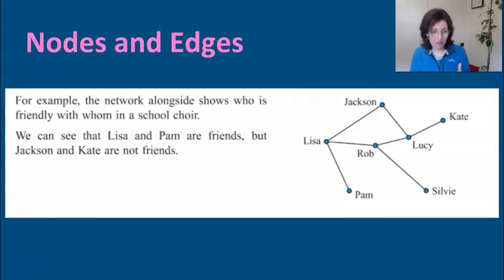Here's an example of a friendship network, and it shows who's friendly with whom in the school choir. Having a look at that diagram, the nodes are the circles here that represent each person, and the edges are the lines that connect them. What can we tell from this? Lisa and Pam are friends, so we can tell that their nodes are connected by an edge. But Jackson and Kate are not friends. Notice, here's Jackson, and here's Kate, and they're not connected by an edge. You might say they're sort of connected because Jackson is connected to Kate through Lucy. But in this scenario, we're not talking about those secondary connections. We're saying that they're not connected directly.